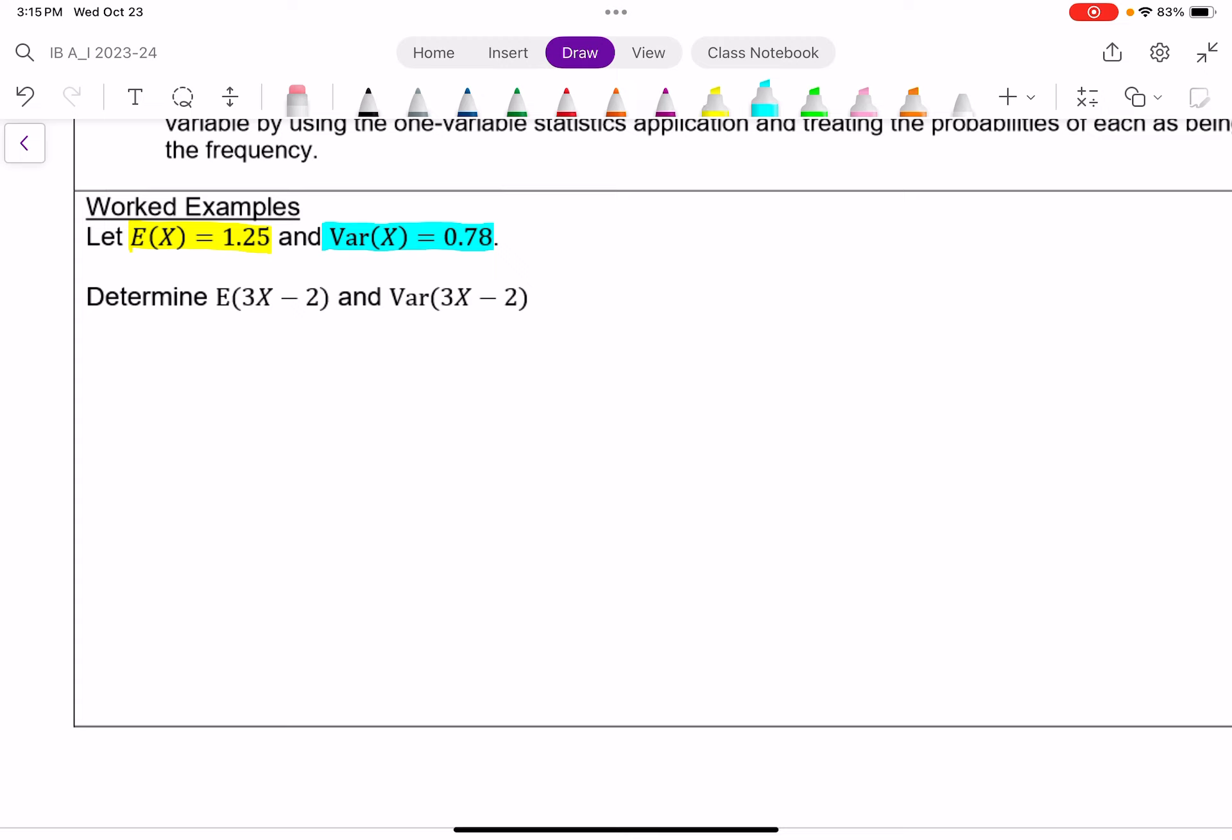Here we're looking at, what if we have the expected value of 3X minus 2? That means, what if we triple all the values that are possible and then subtract 2? For example, let's say we're rolling a dice. If you're rolling a six-sided dice, your expected values are 1, 2, 3, 4, 5, and 6 most likely. The expected value of all this would be 3.5. Well, in this case, 3X minus 2 would mean what if instead of 1, 2, 3, 4, 5, 6, what if we triple all these and then subtract 2?